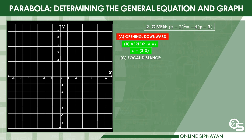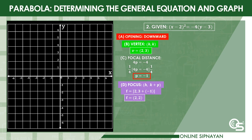Next is the focal distance. From the given standard formula, 4p = −4. Simplifying using the multiplication property of equality, we get p = −1. Next is the focus, which is at (h, k + p) from summary table number 3. Substituting, we get (2, 3 + (−1)) = (2, 2). From summary table number 3, the directrix is y = k − p. Substituting the focal distance and k, we get the directrix at y = 4.